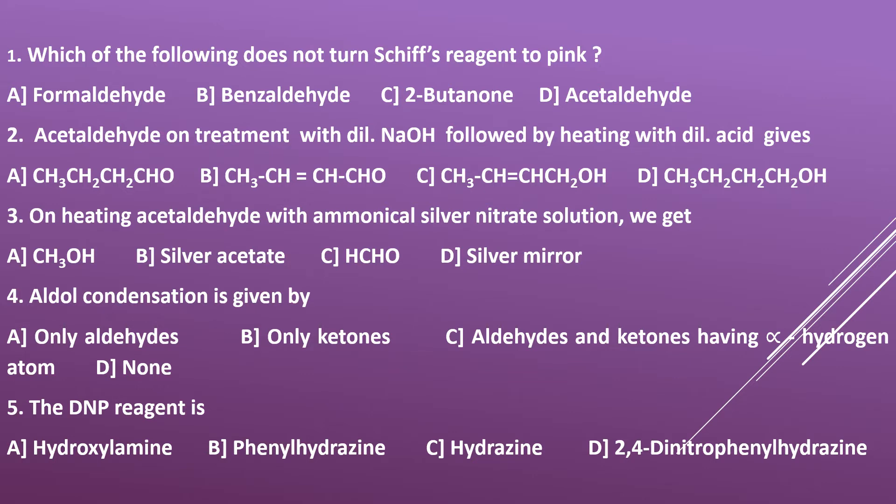Which reaction is this? Acetaldehyde on treatment with dilute base followed by protonation — this is aldol condensation. Aldehydes with alpha hydrogen condense with one another in the presence of dilute alkali followed by protonation to give aldol or alpha,beta-unsaturated aldehyde. So B is the answer: CH3CH=CHCHO.